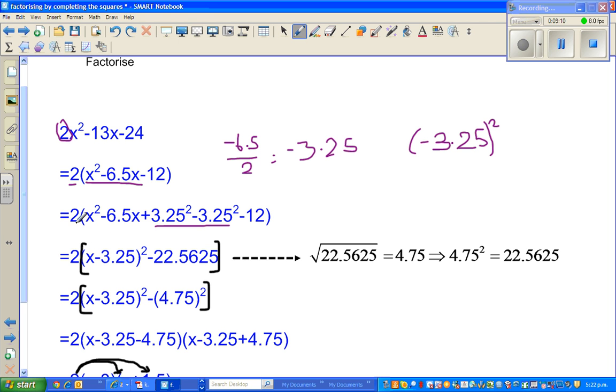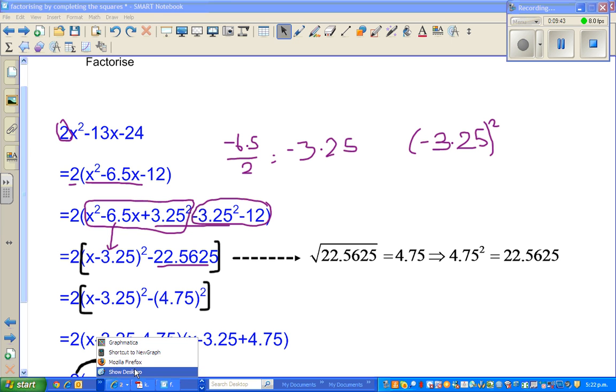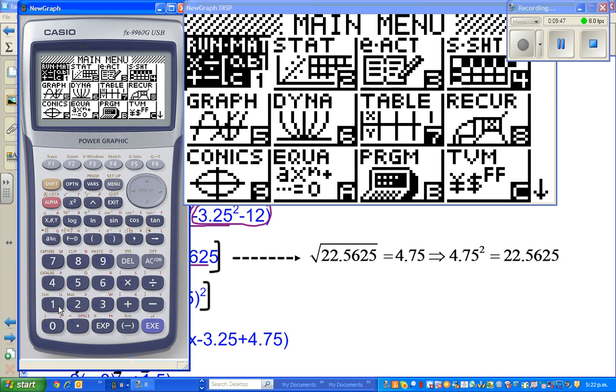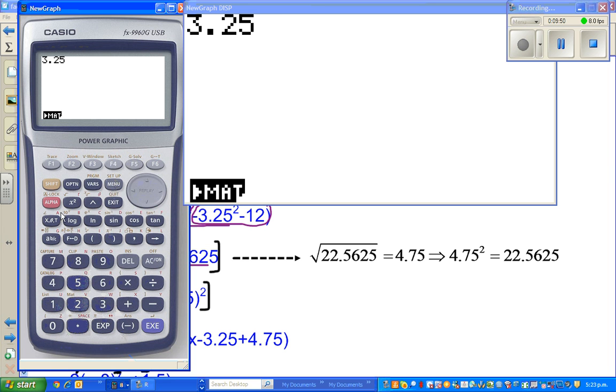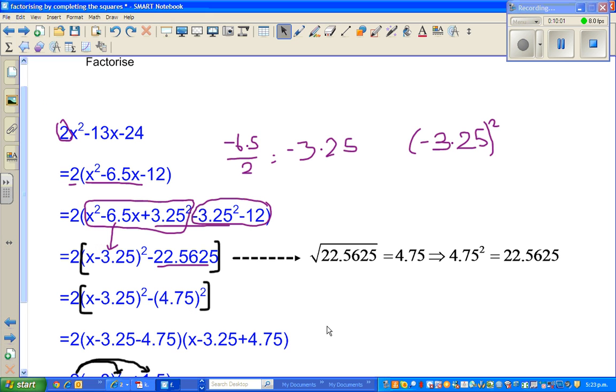Because you've got 2 here, I brought the 2 down. So this has become a perfect square now. This is a perfect square, and this will also end up to be a perfect square. So this factorizes to 2[(x-3.25)²-22.5625]. That's a huge number. I'll show this on the calculator. So 3.25²+12, because I'm taking the minus out. 22.5625.